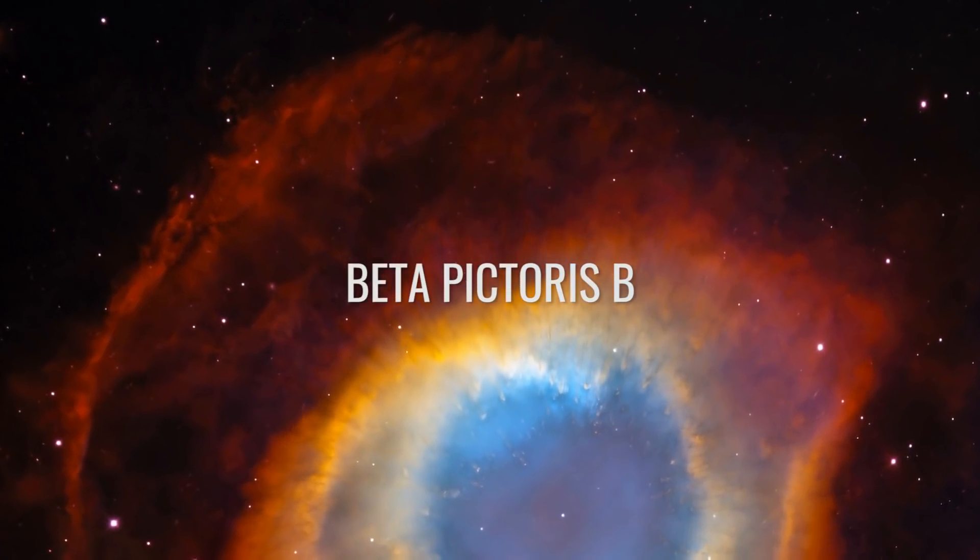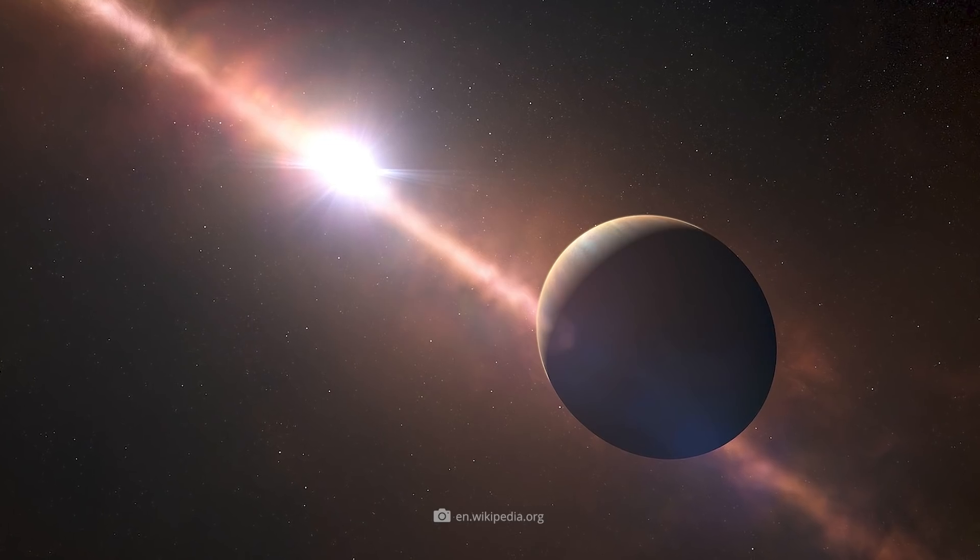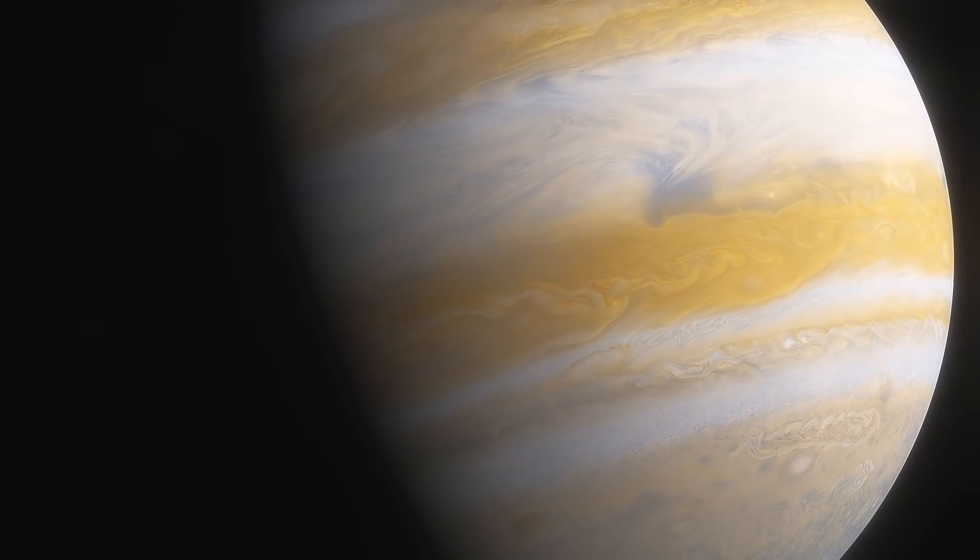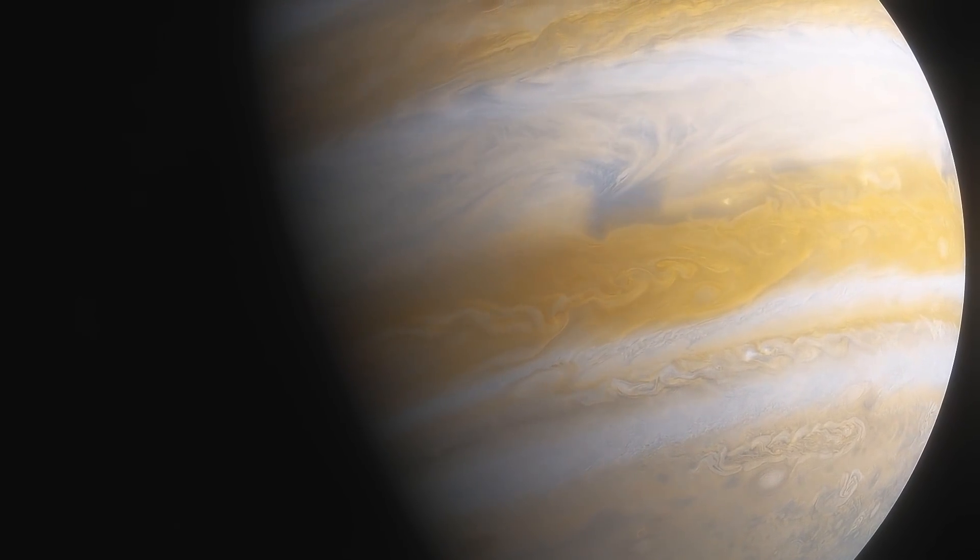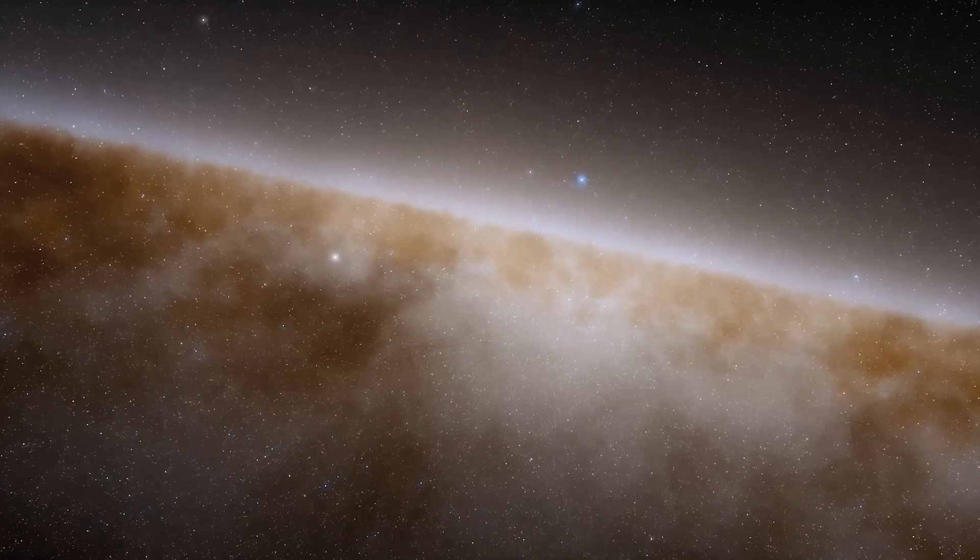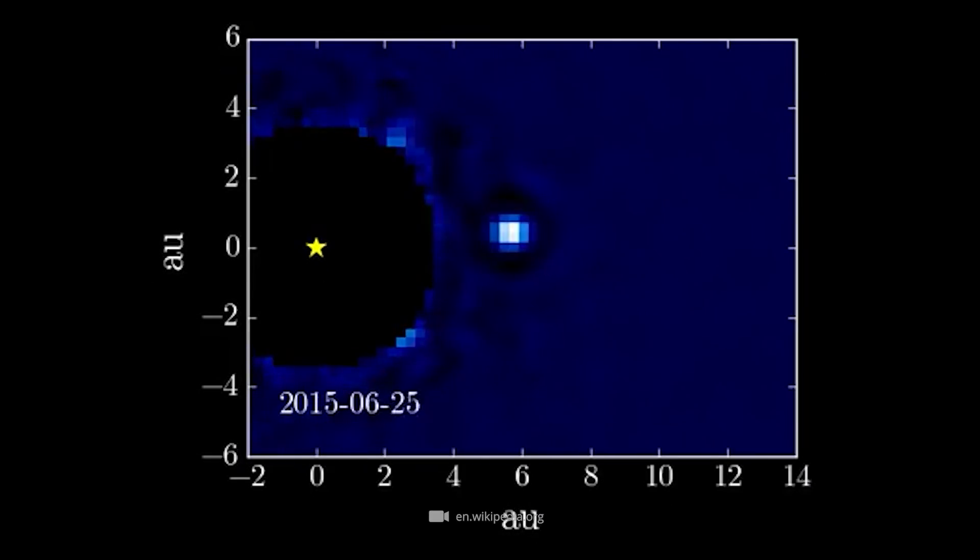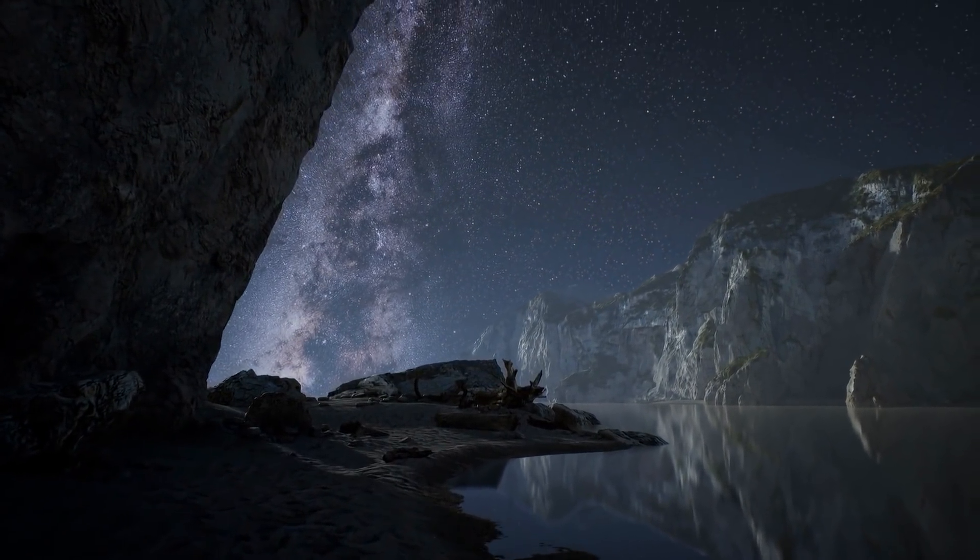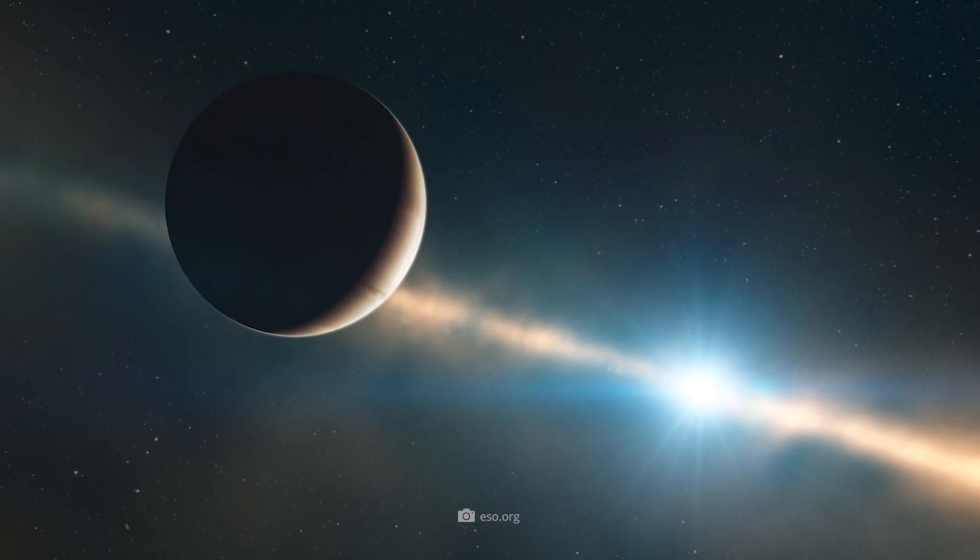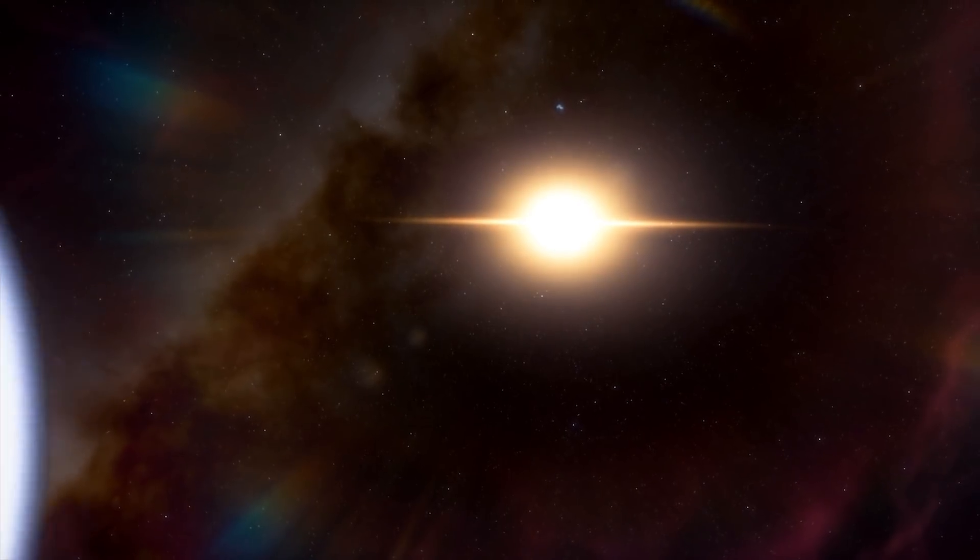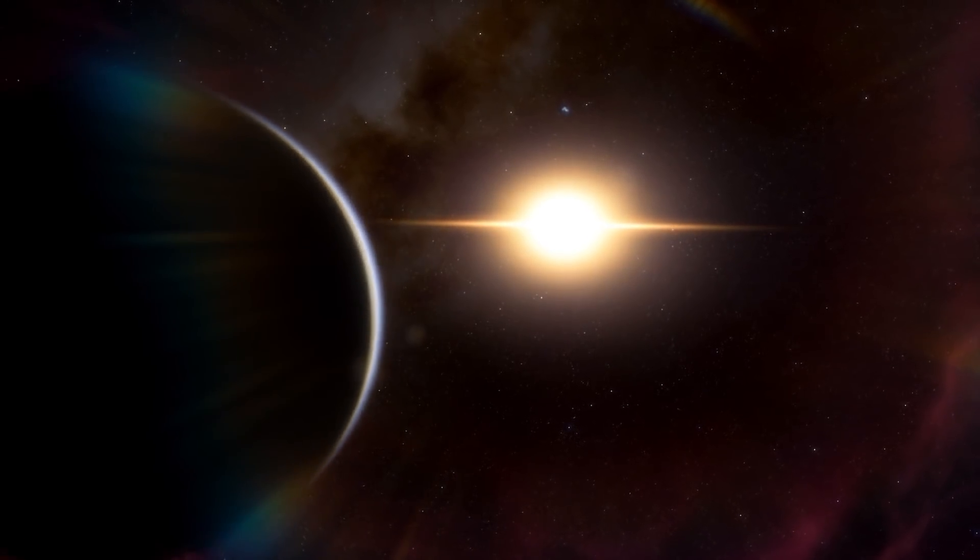Beta Pictoris B has a mass of about 13 Jupiter masses, whereby its radius exceeds that of Jupiter by a good 45%. Consequently, the celestial body is classified in the ranks of the so-called super-Jupiters. The celestial body orbits around the still young, disc-shaped main-sequence star Beta Pictoris, which is located about 63 light-years away from our blue home planet. Since Beta Pictoris B orbits its namesake host star at a distance of 9 astronomical units, it takes about 20 years before the planet has completed a full orbit.